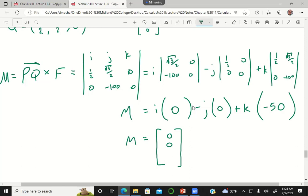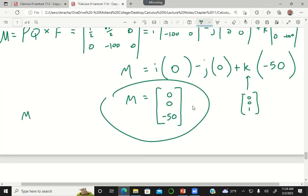Perfect - zero, zero, negative 50, because remember k is the vector that is (0,0,1). So that's my M vector, and the last thing we have to do is take the norm. The norm of M is...